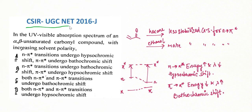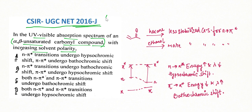The next question is from CSIR UGC NET exam, June 2016. The question asks: in the UV-visible absorption spectrum of an alpha-beta unsaturated carbonyl compound, with increasing solvent polarity, which statement is correct? In an alpha-beta unsaturated compound, there are two types of transitions: the π→π* transition and the n→π* transition. Option A states that the n→π* transition undergoes hypsochromic shift and the π→π* undergoes bathochromic shift with increasing solvent polarity.